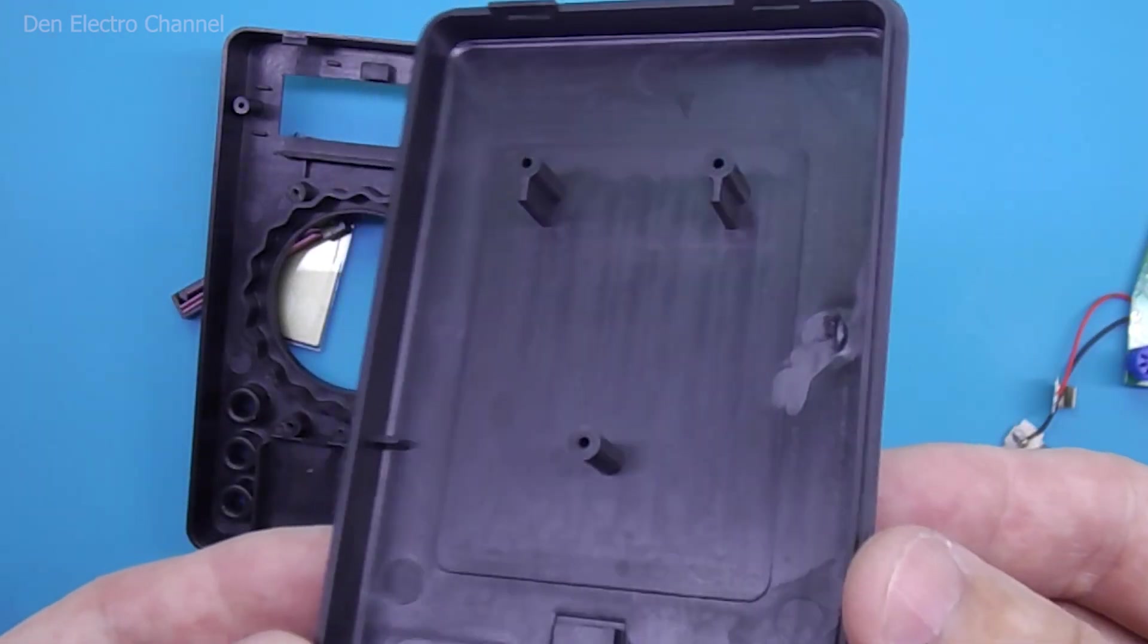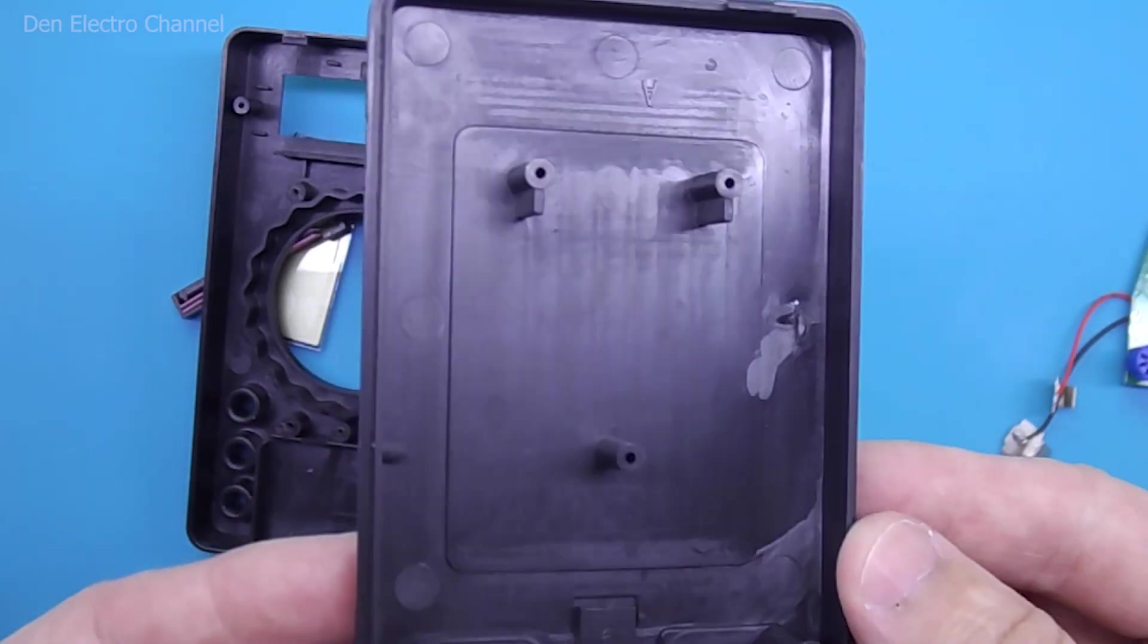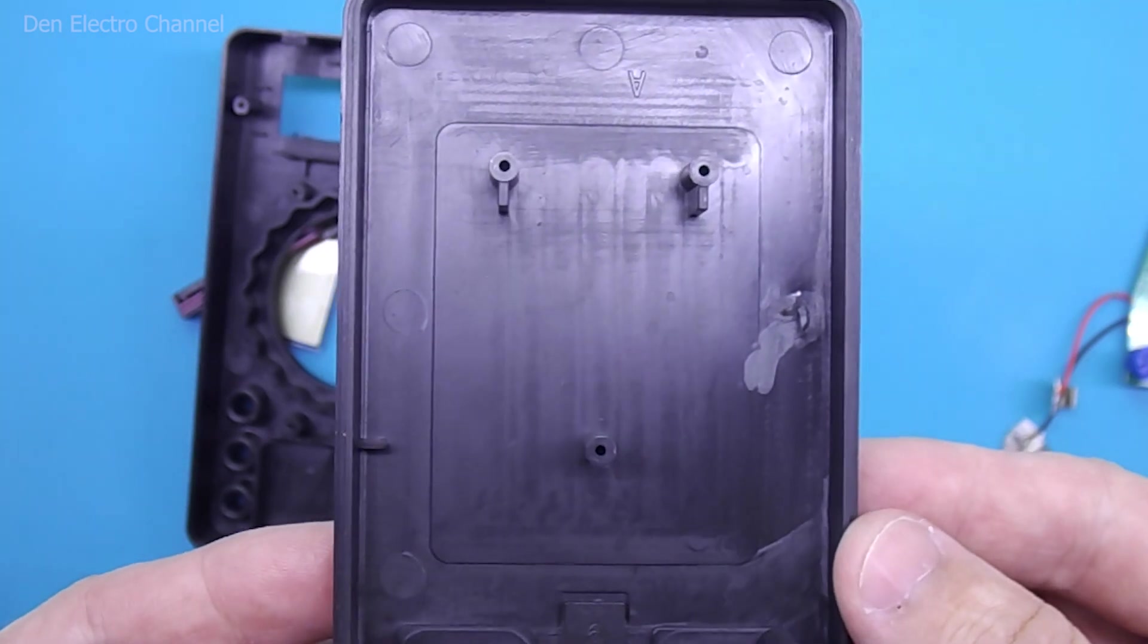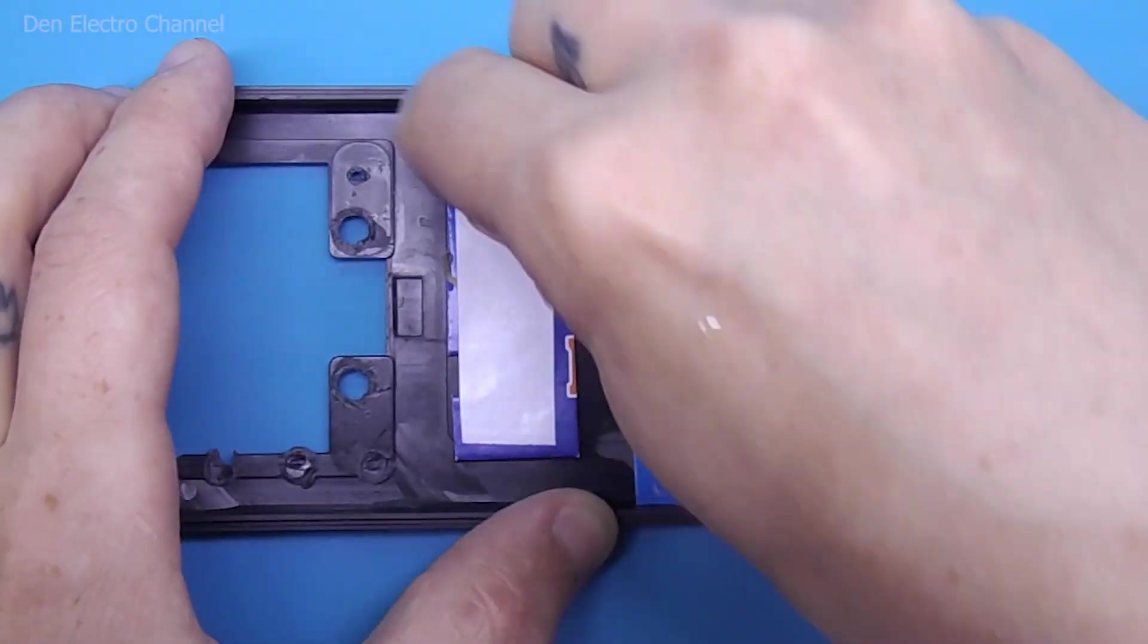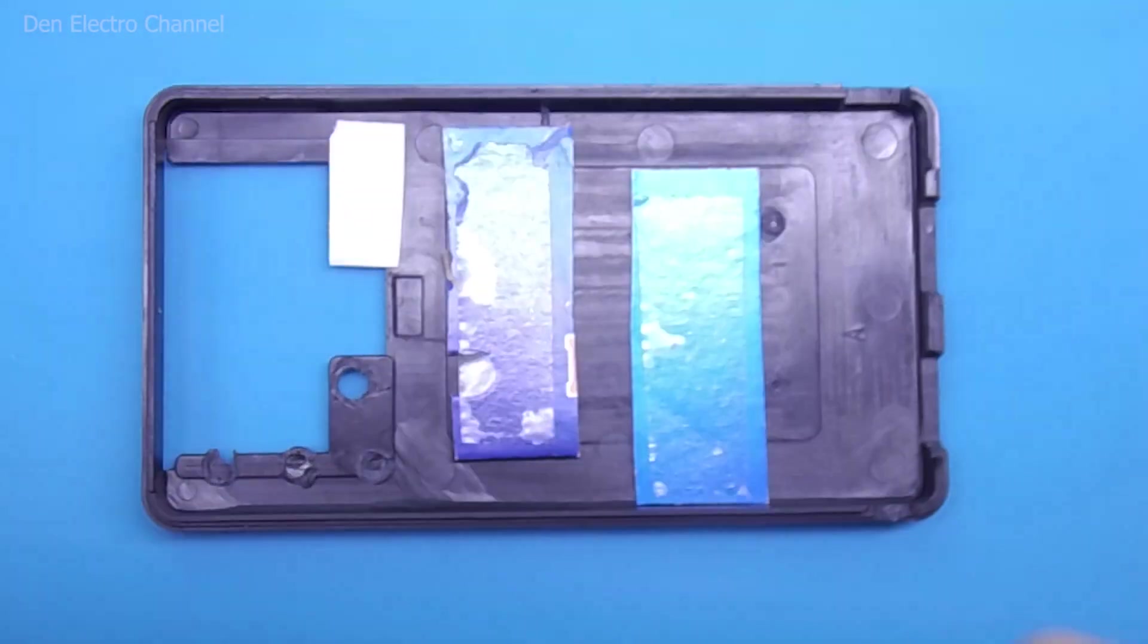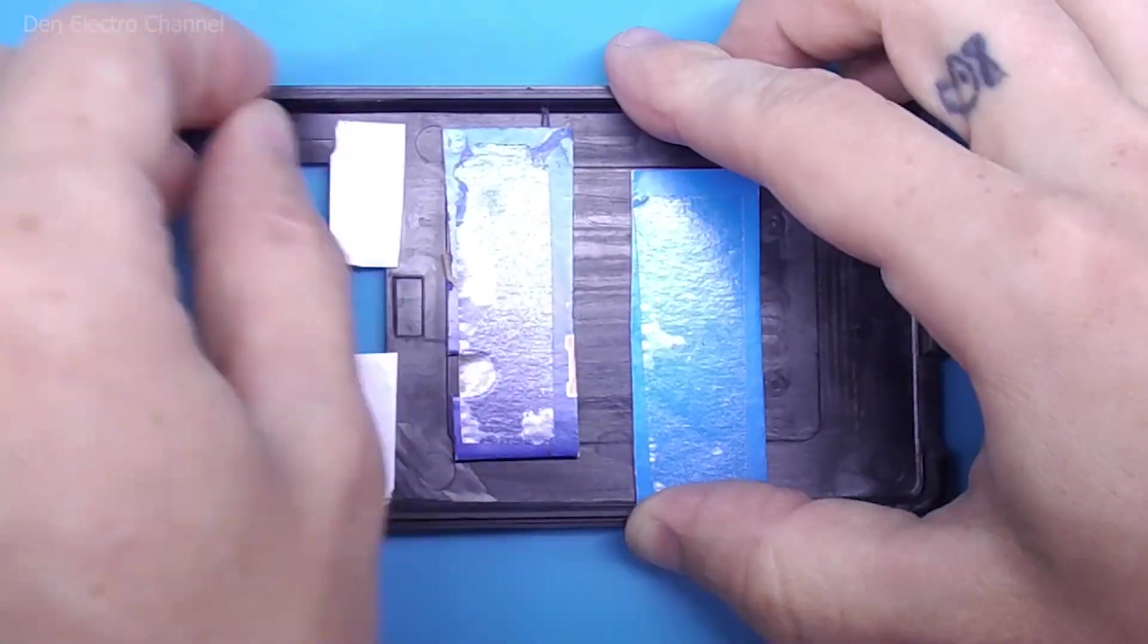The back cover is full of all sorts of pillars and irregularities. They must be dismantled to level the surface. Then I glue the cardboard with double-sided tape. This is all done to smooth the surface.